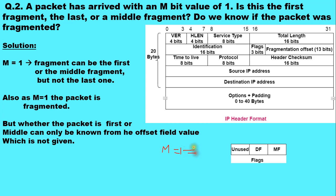And when more fragment bit is set to 1, it means that the packet can be the first fragment or it can be the middle fragment. But the packet is first fragment when the offset field value is 0, which is not provided to us.